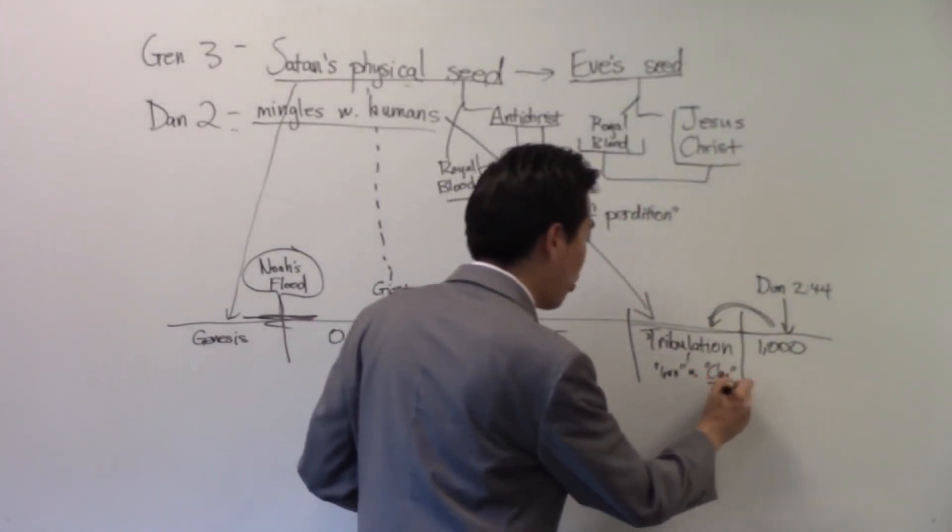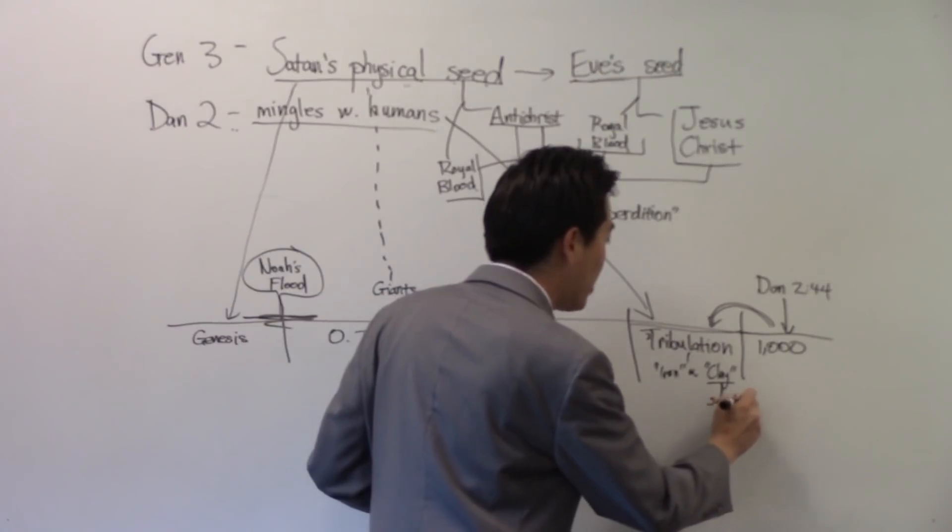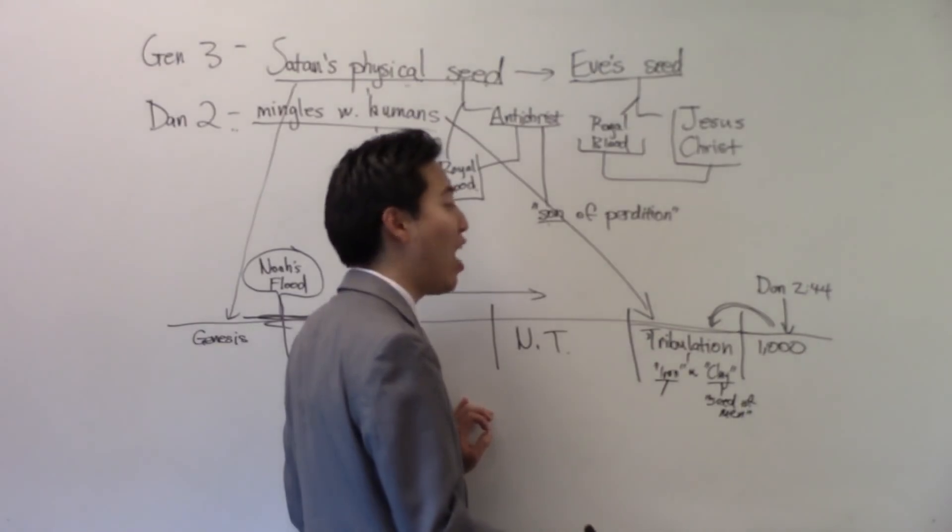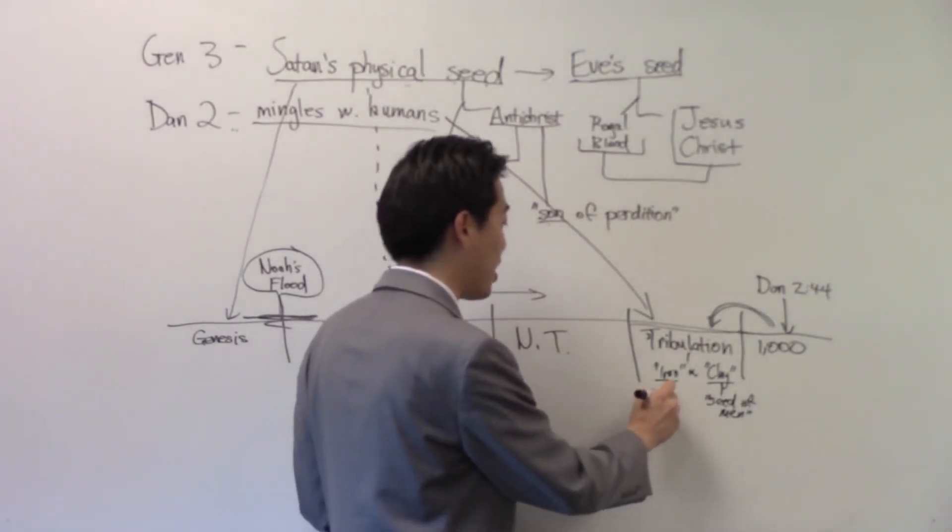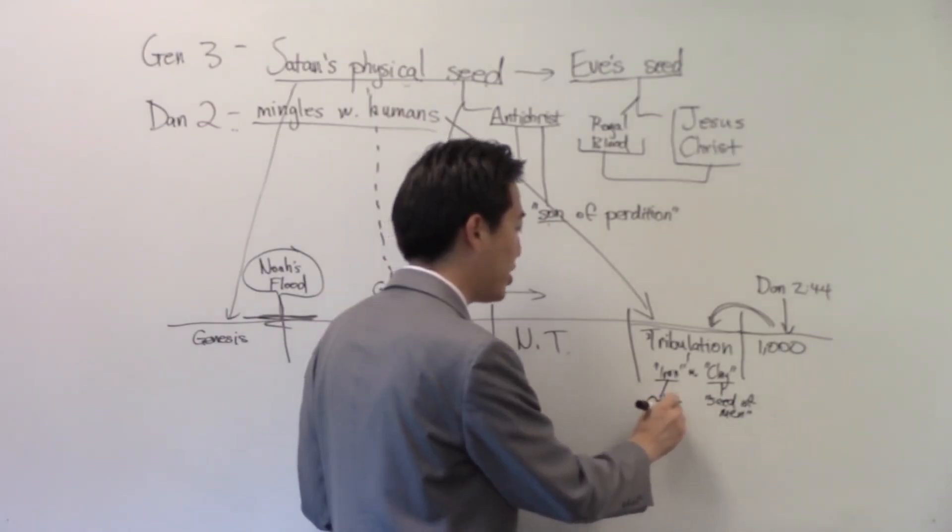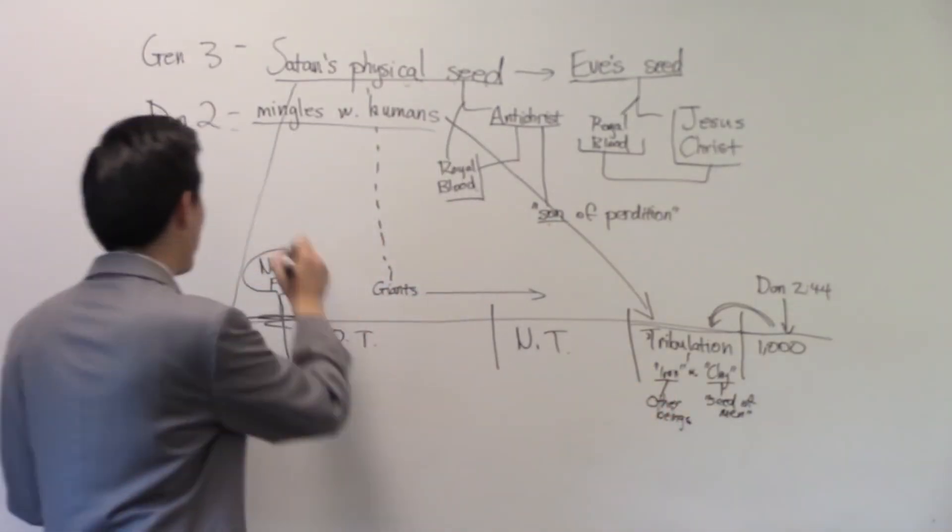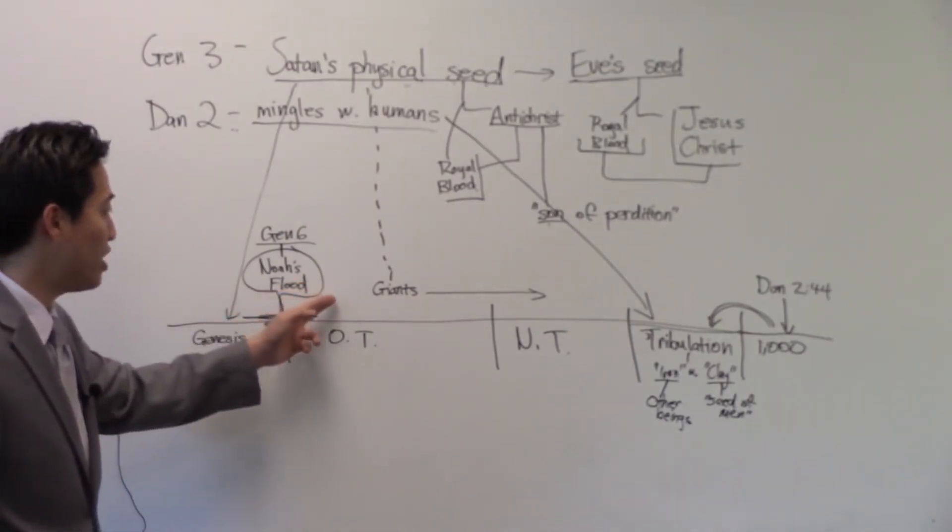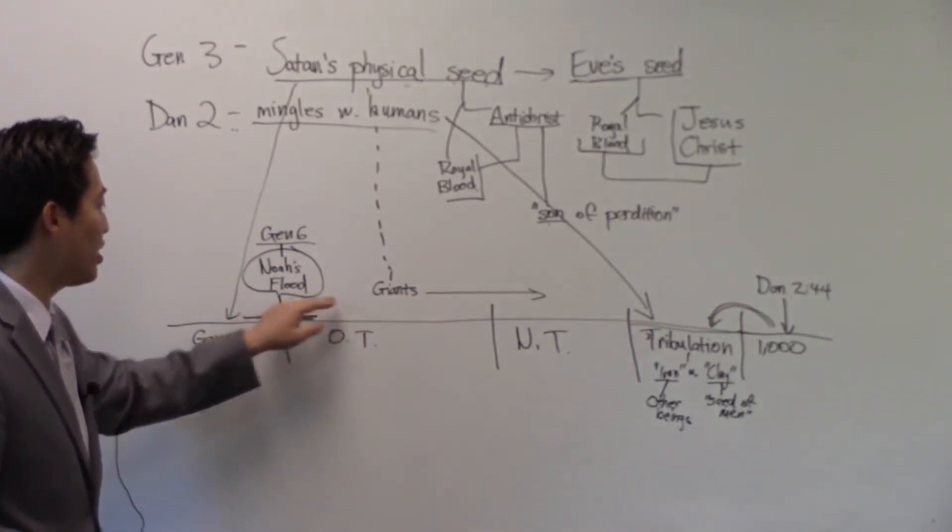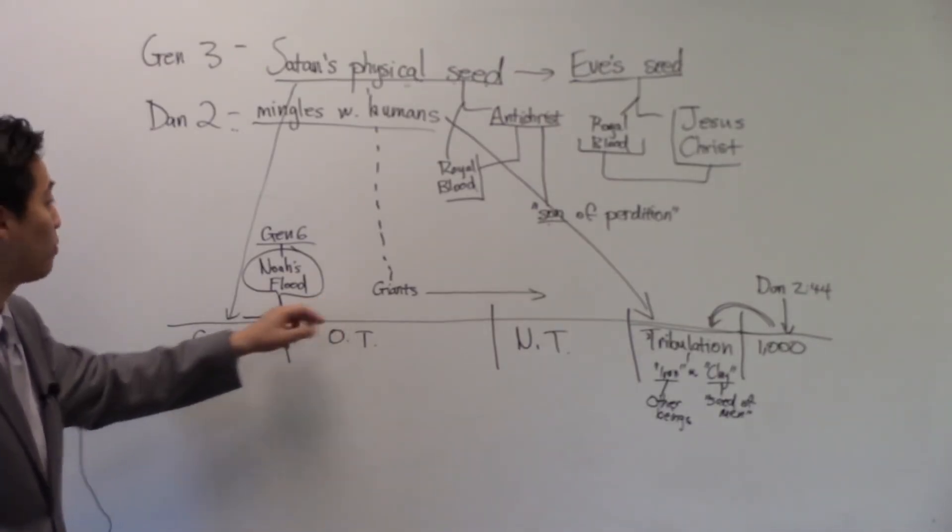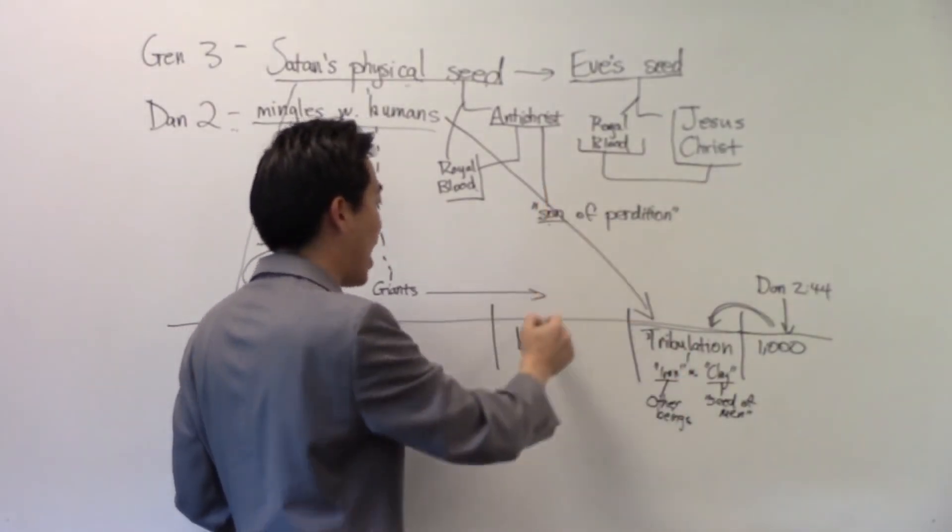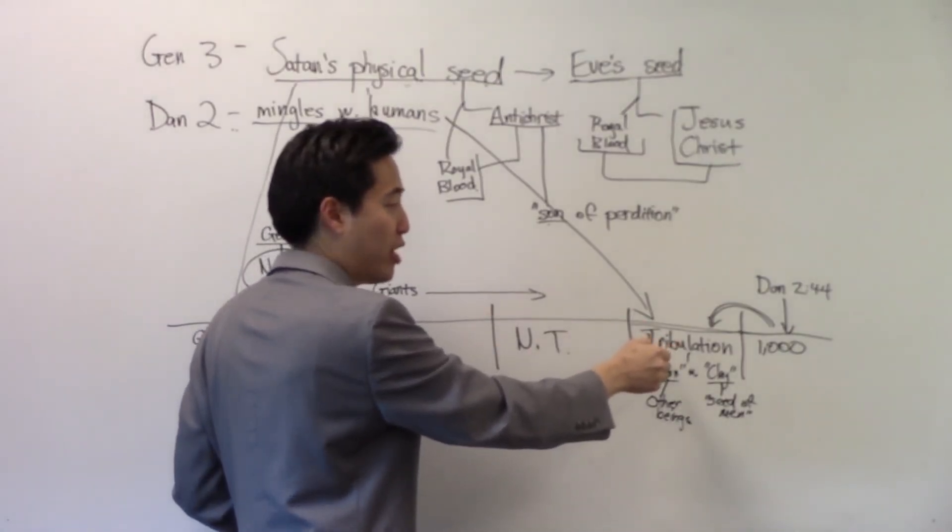We see right here that the clay is referring to seed of men. Well, there's your humans right here. So, we can't say that this iron here is referring to humans, because the humans is already taken here. Who's this iron then? It's other beings. Well, what other beings then? All you have to do is compare with Genesis 6, right? Genesis 6 shows that these other beings mingled themselves with the humans, and then God had to drown them all out. That's why these strange bloodlines came out. These giants, these mighty men of old, men of renown in Genesis 6. So, this has to happen right here. We see that.